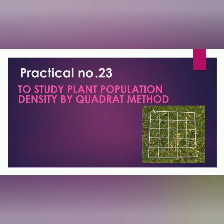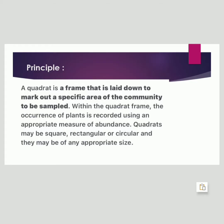Practical No. 23: To study plant population density by quadrate method. Principle: A quadrate is a frame that is laid down to mark out a specific area of the community to be sampled. Within the quadrate frame, the occurrence of plants is recorded using an appropriate measure of abundance. Quadrates may be square, rectangular or circular and they may be of any appropriate size.